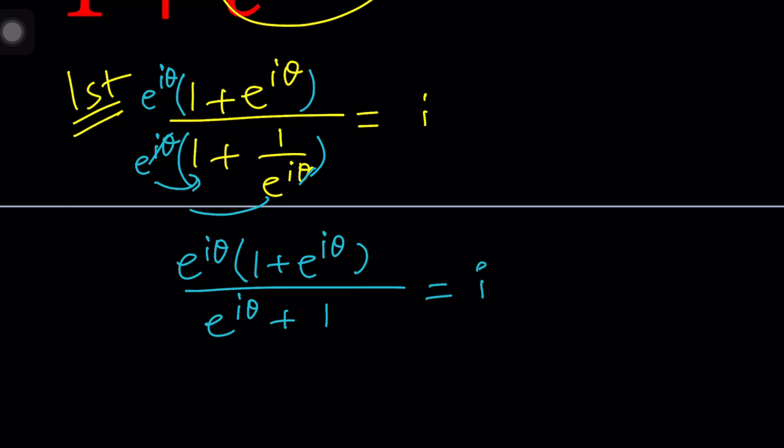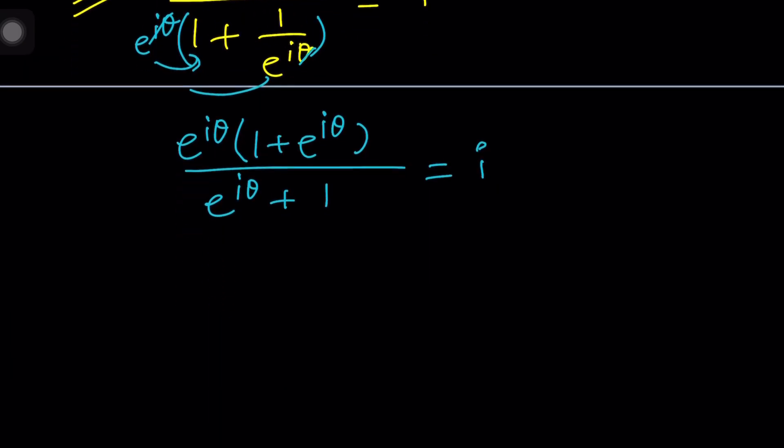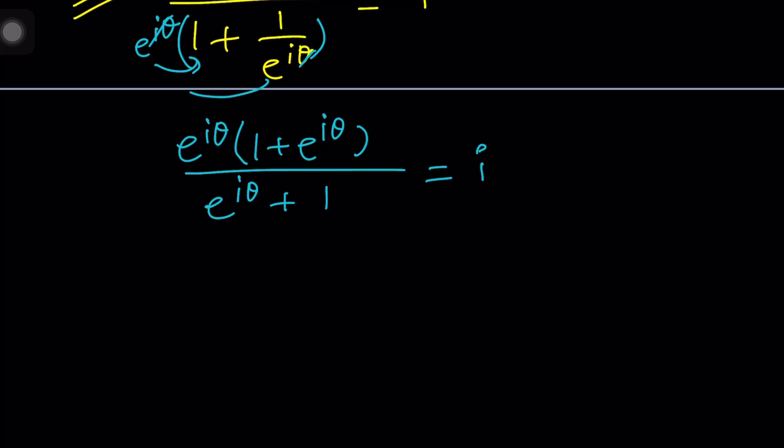Now this is really nice, and notice that it was good that we didn't distribute because we can kind of simplify this out. But there's one thing that you need to be careful about. You need to make sure that e to the iθ plus 1 does not equal 0. Because what happens if it's 0? Then you get 0 divided by 0, which is very problematic. So let's just assume that e to the iθ plus 1 does not equal 0. In other words, e to the iθ does not equal negative 1.